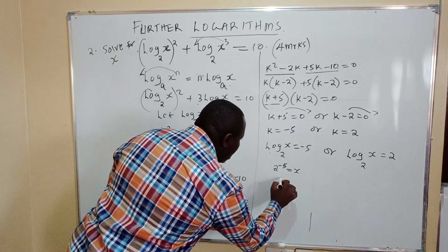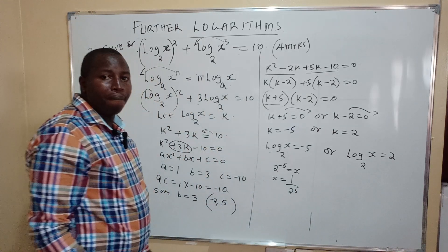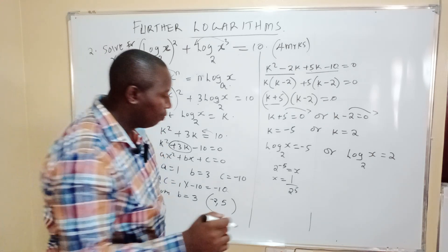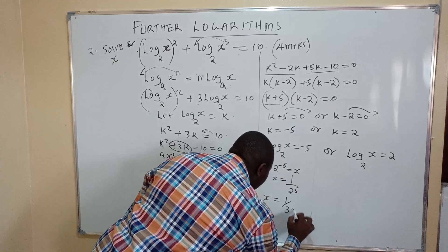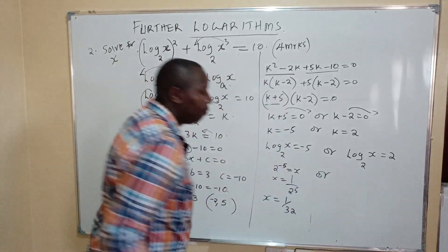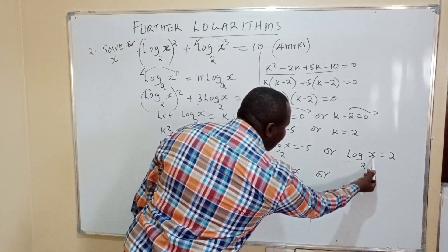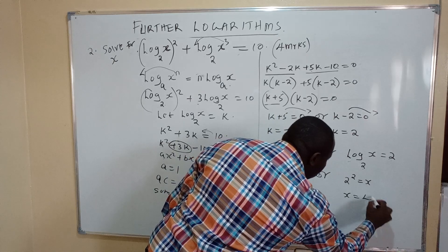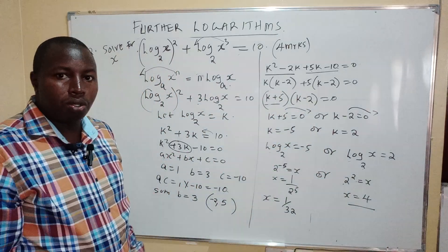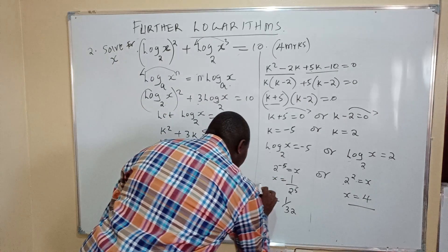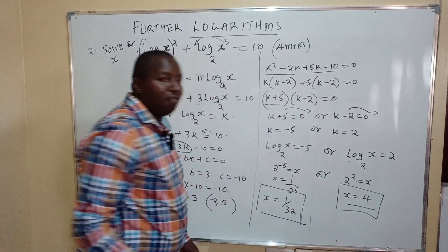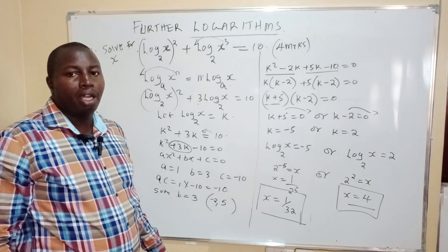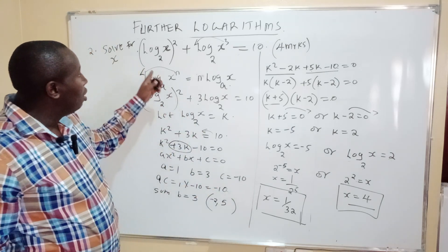For the second value: log x to base 2 equals 2, so in index form, 2 to the power 2 equals x, giving x equals 4. Therefore, x equals 4 or x equals 1 over 32. That is how to solve a logarithm equation.